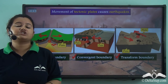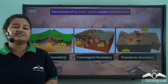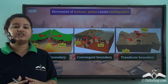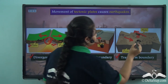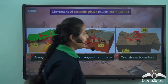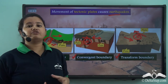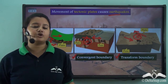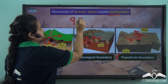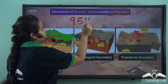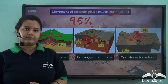The movement of tectonic plates causes stress on the earth's surface, and energy is released in the form of waves, which induces earthquakes. Thus, movement of tectonic plates is an important cause of an earthquake — around 95 percent of earthquakes are caused due to movement of tectonic plates.